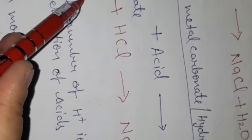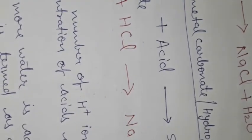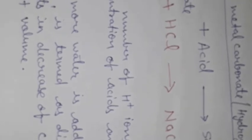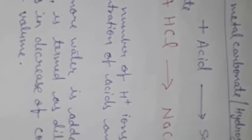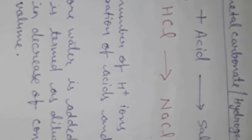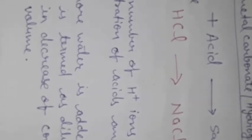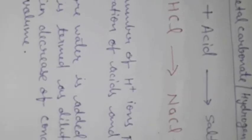The number of H⁺ ions per unit volume is known as the concentration of acids and bases. When we add more water to these solutions, that is termed the dilution process. Dilution decreases the H⁺ ions per unit volume. A concentrated solution has more H⁺ ions, while a dilute solution has fewer H⁺ ions.